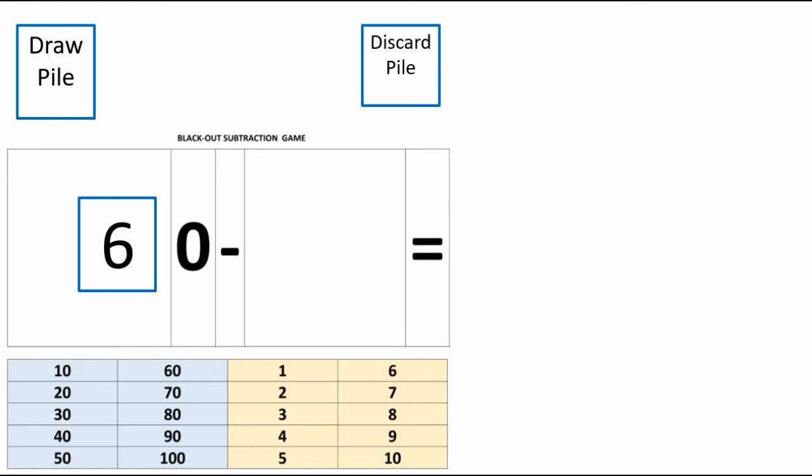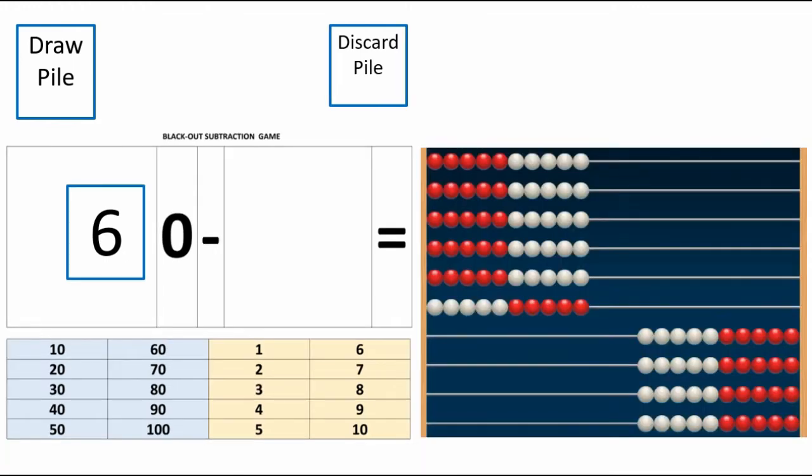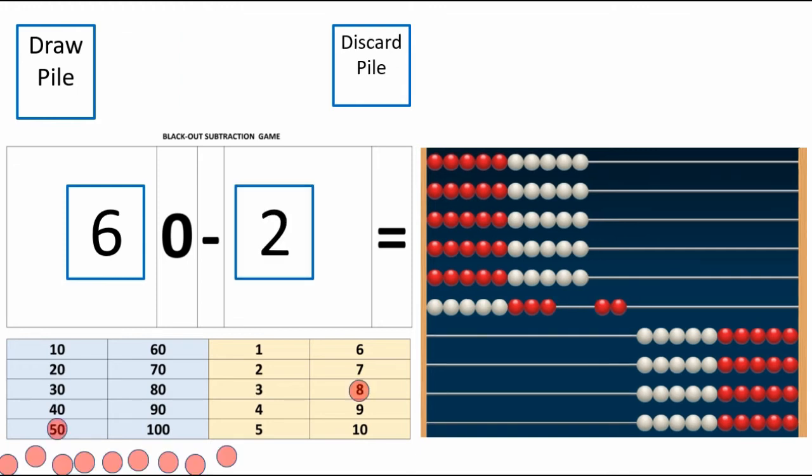Now I'm going to draw a second card. That card is two in this case. So that card automatically goes into the ones place, the subtrahend place. The problem I'm going to be working on is 60 minus 2.